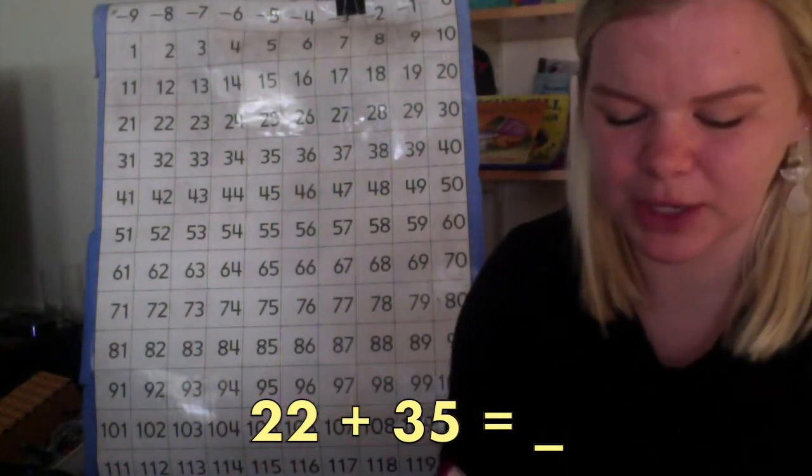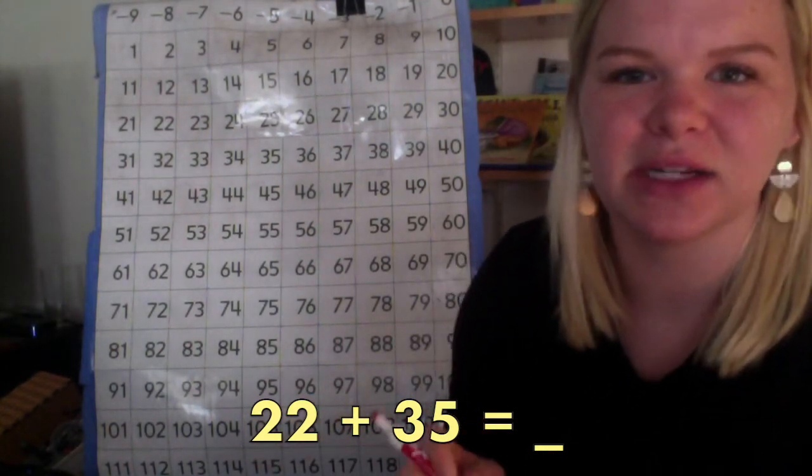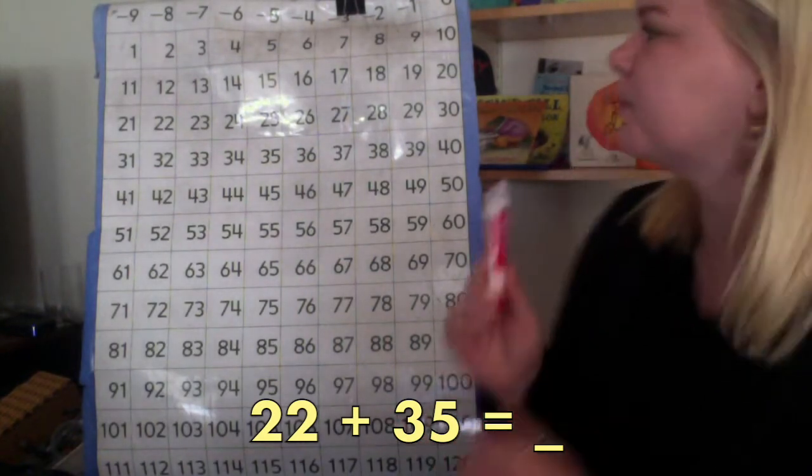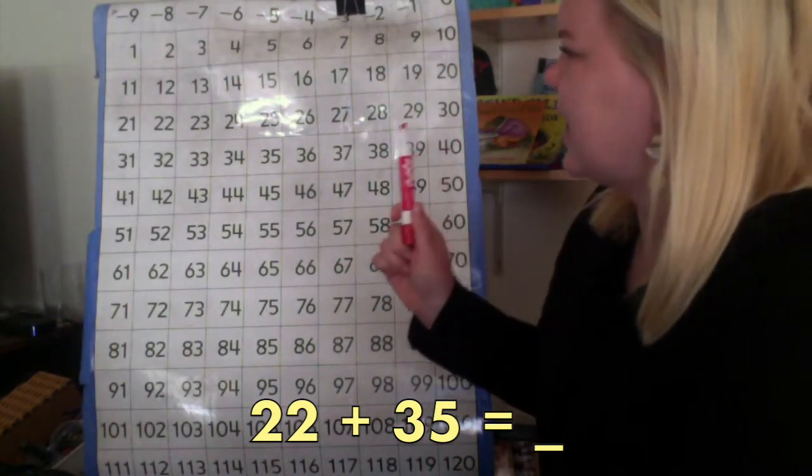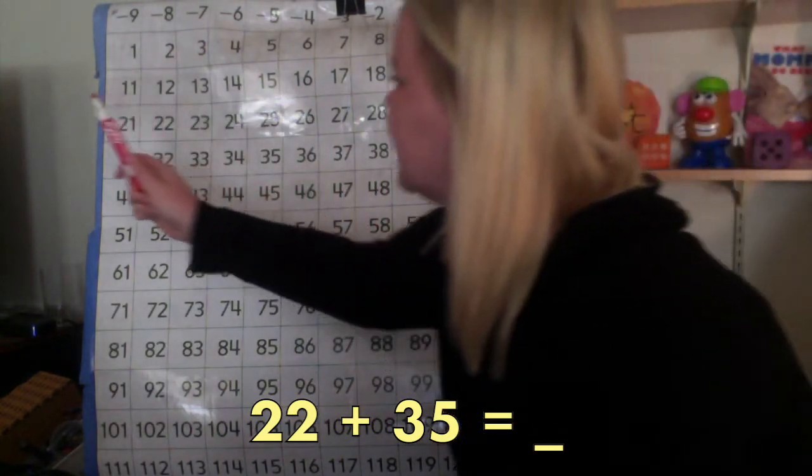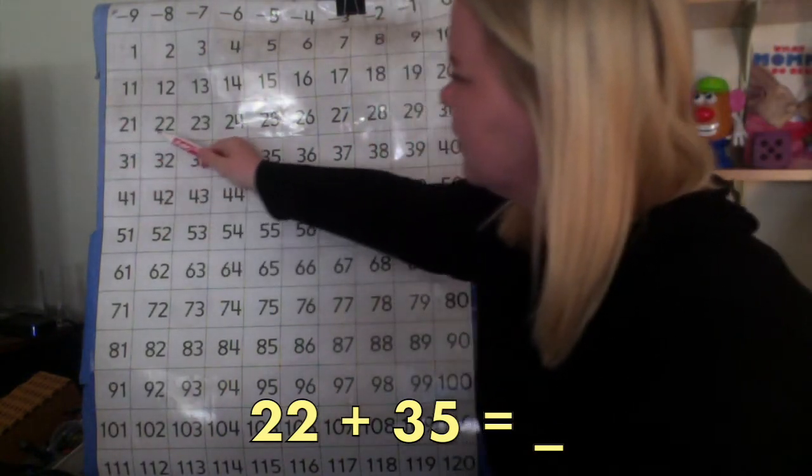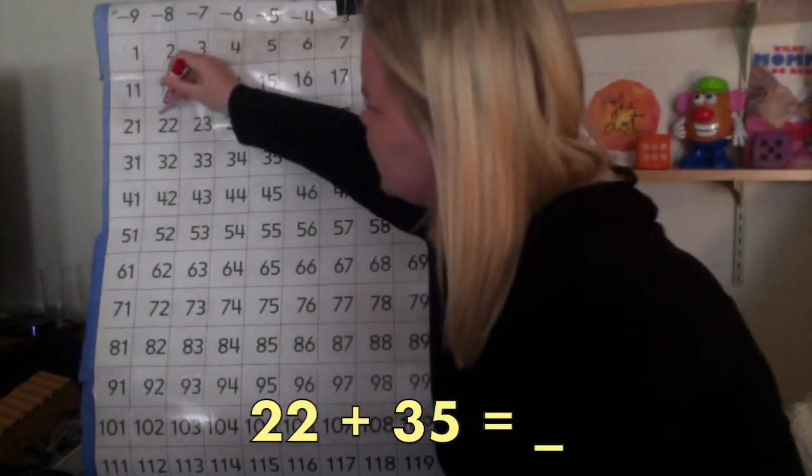So, our first number is 22. Let's find 22 on the number grid. I'm going to look for the 20s, which means they have a 2 in the tens place. Oh, there it is, 22.